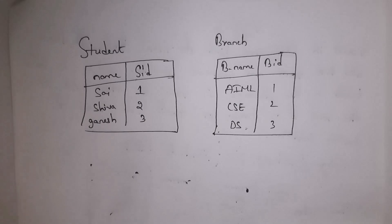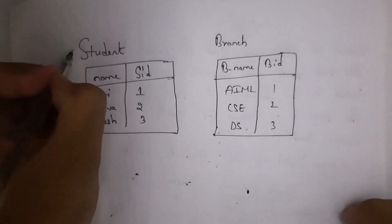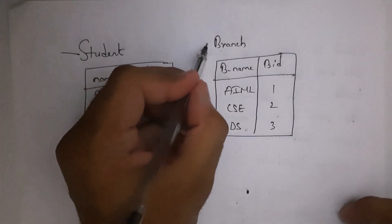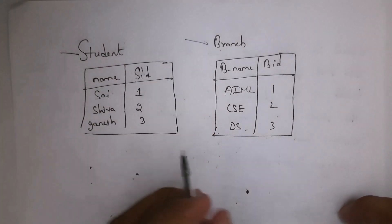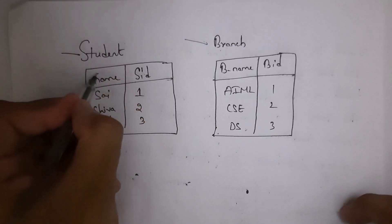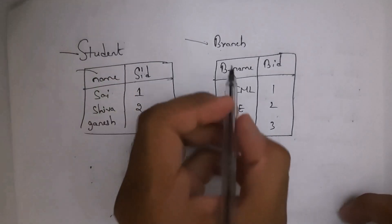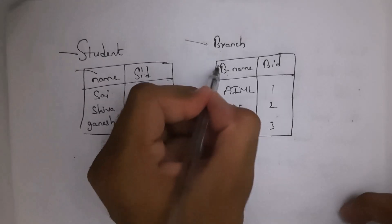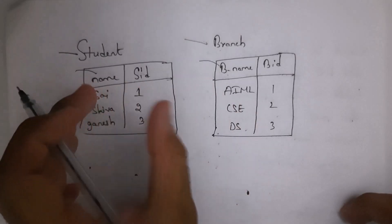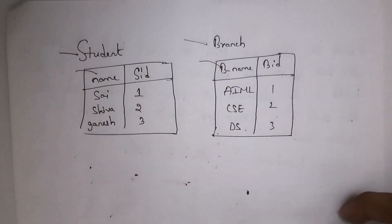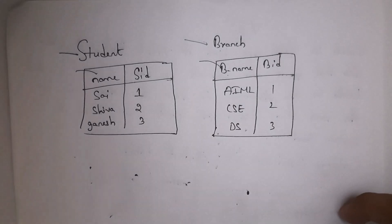If you create a view by selecting multiple tables, we call it a complex view. For example, let us consider there are two tables: a student table and a branch table. I want to select the name column from the student table and the branch_name column from the branch table. By selecting these two columns I want to create one separate view.